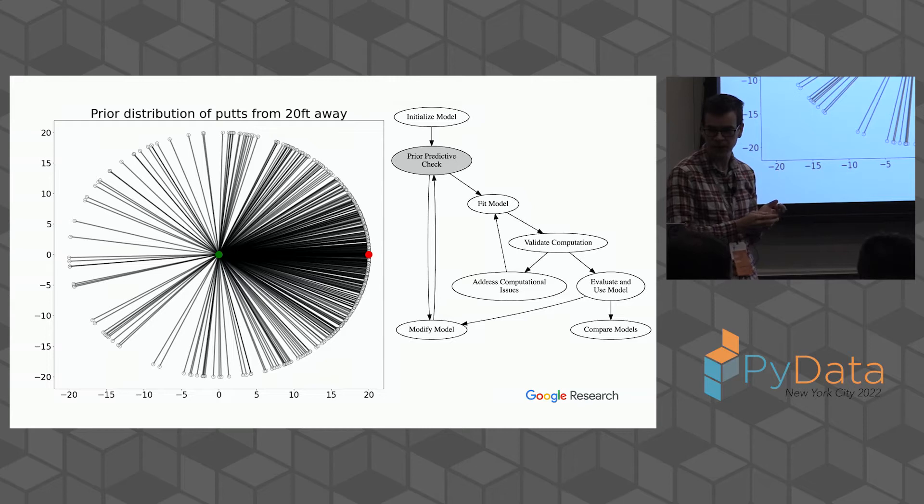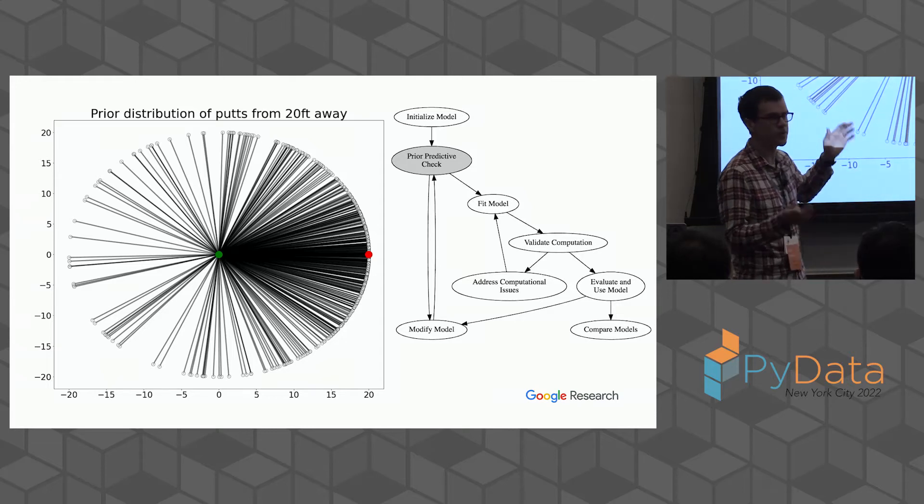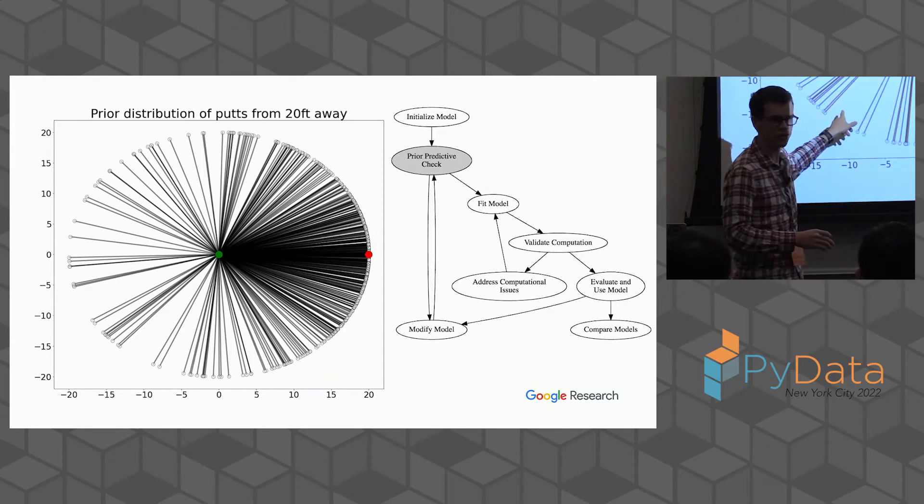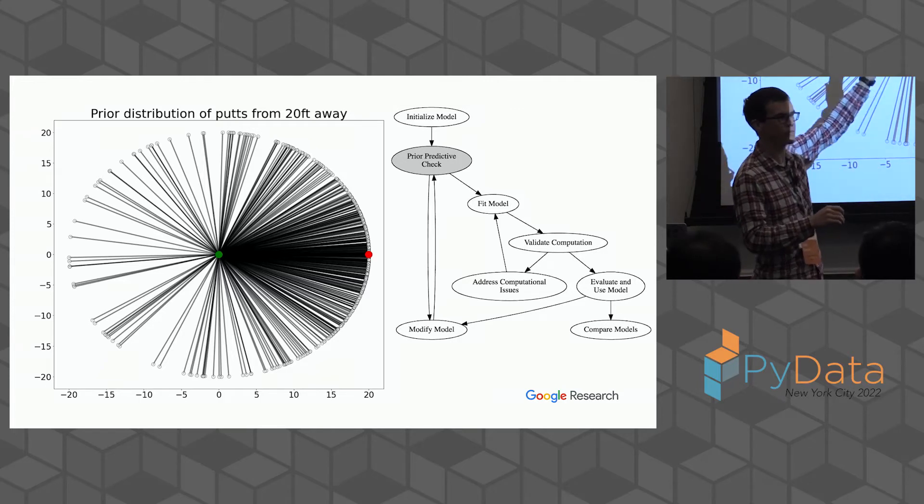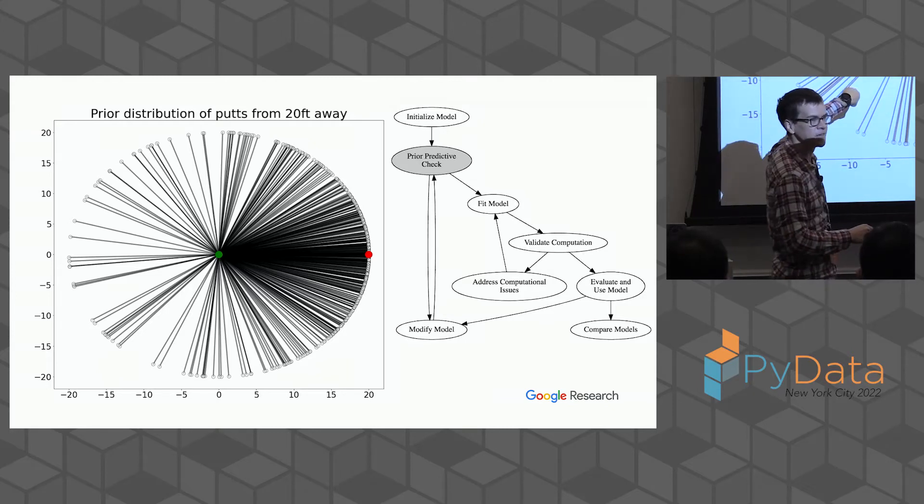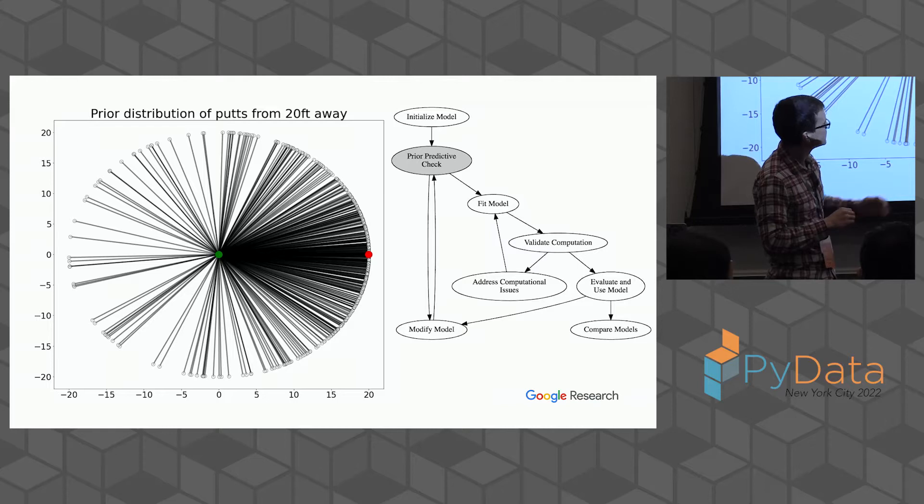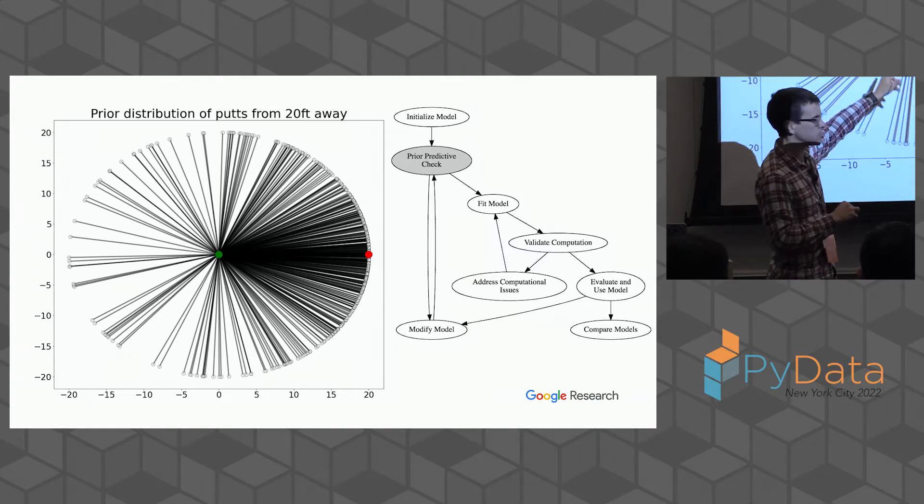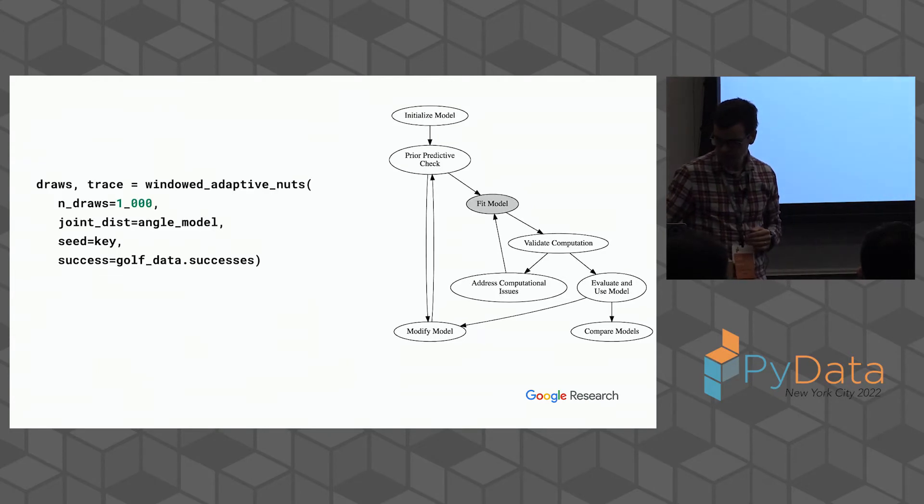So we modified our model. I'm going to do a more interesting prior predictive check this time, where I sample from the prior and I see where the prior suggests we actually putted the ball. Green is where we start. Red is where we're aiming. Our prior says that maybe a professional golfer when they're starting here sometimes hits it over here. That's not that reasonable. There's some funny things about this prior, but it turns out that professional golfers don't actually hit it this way that often.